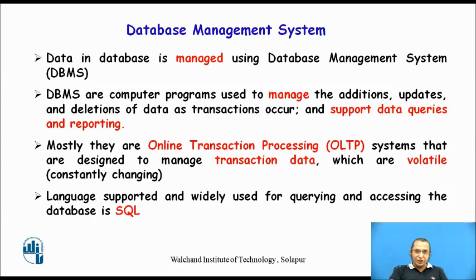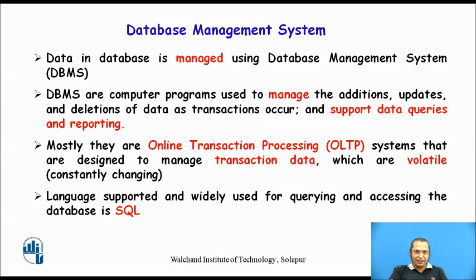Mostly there are DBMS or OLTP systems. OLTP stands for Online Transaction Processing System, which is designed to manage transaction data that is volatile — meaning data that is continuously changing. In an organization, whenever transactions are occurring continuously as part of the organization's processes, the data is being changed. That kind of system is called an Online Transaction Processing System, dealing with transacting and volatile data. SQL is the language widely used for querying and accessing the database.